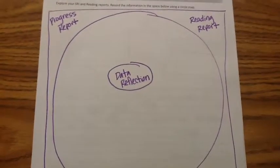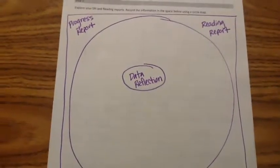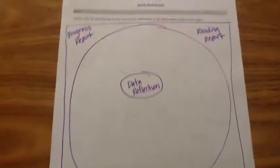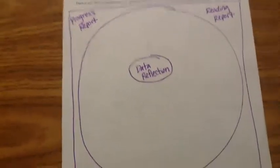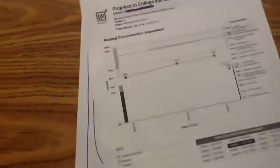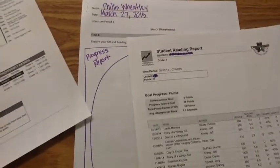For this assignment, the things that I write in purple you also need to write. The things that I write in red will be examples for how you will be applying this for yourself. So taking a look, the two reports that you should have are the progress report, which looks like this, the graph on it, and then you also need the reading report, which looks like this.